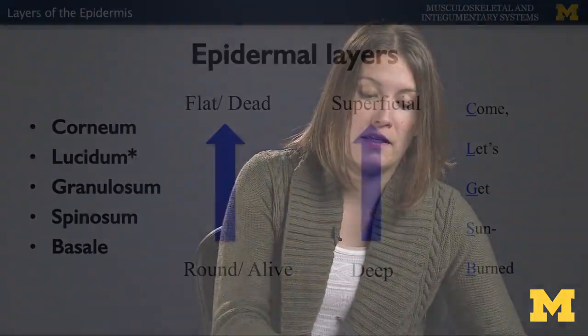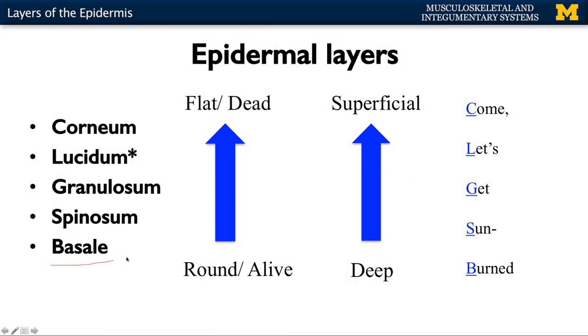Thick skin is going to be located in two main areas of the body: on your palms and digits, and on the soles of your feet as well as the associated digits. When talking about the five layers of thick skin, we start from the deepest layer — stratum basale — and move up to spinosum, granulosum, lucidum, and corneum.